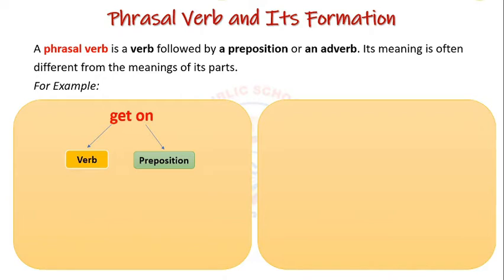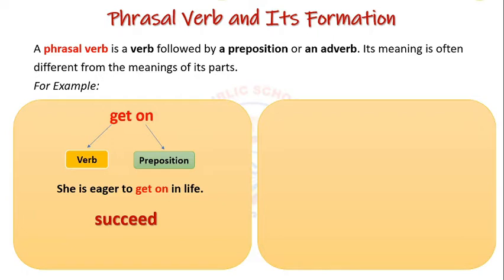Let's frame a sentence. She is eager to get on in life. The phrase 'get on' means succeed. We can also say, she is eager to succeed in life. But whenever we use 'get on,' we sound natural and very fluent.